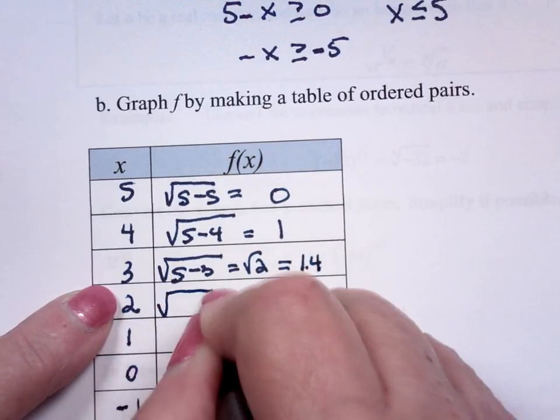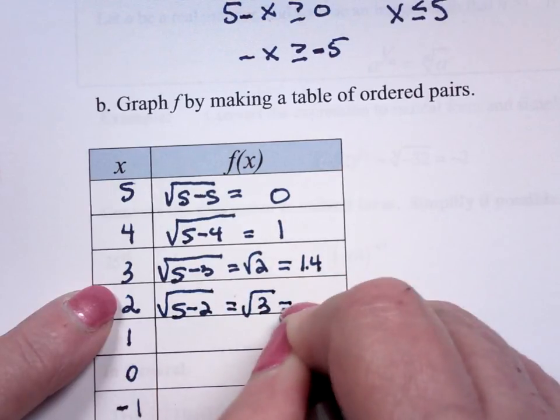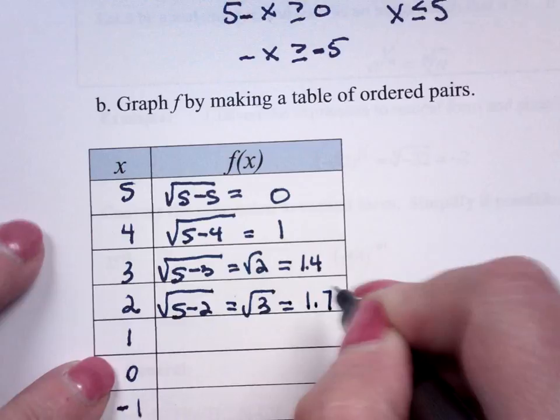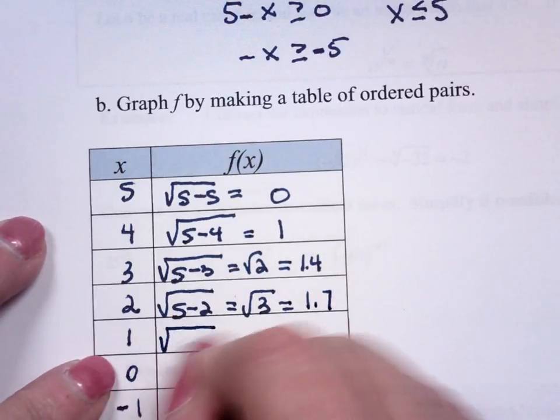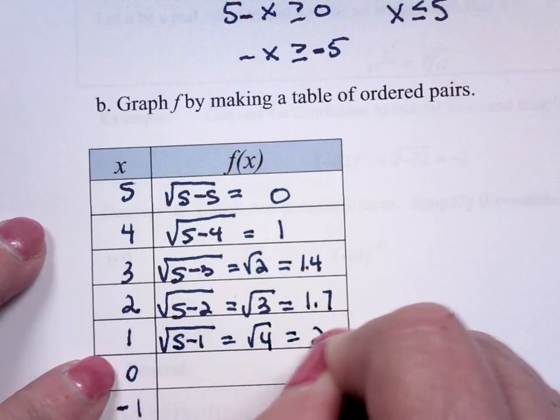Square root of 5 minus 2 is the square root of 3. It's about 1.7. Square root of 5 minus 1, square root of 4. This is 2.